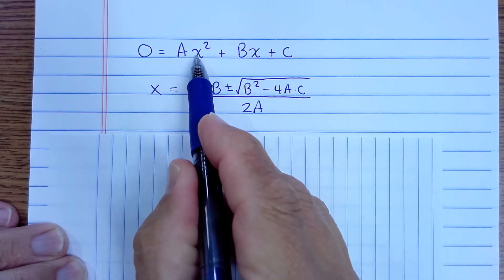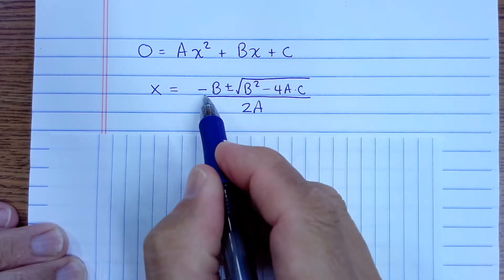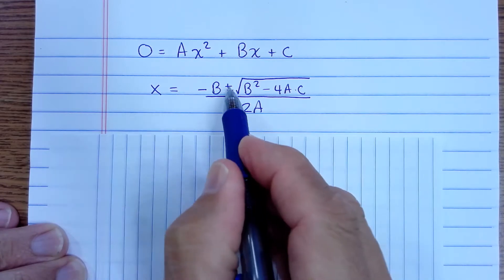So a is whatever is in front of the squared term, b is in front of the linear term, and c is the constant term. You can put it in here and calculate the two values of x. There's two values because it's plus or minus.